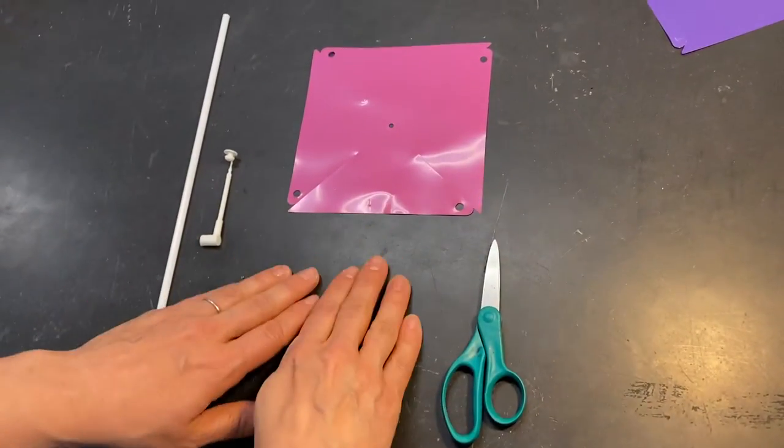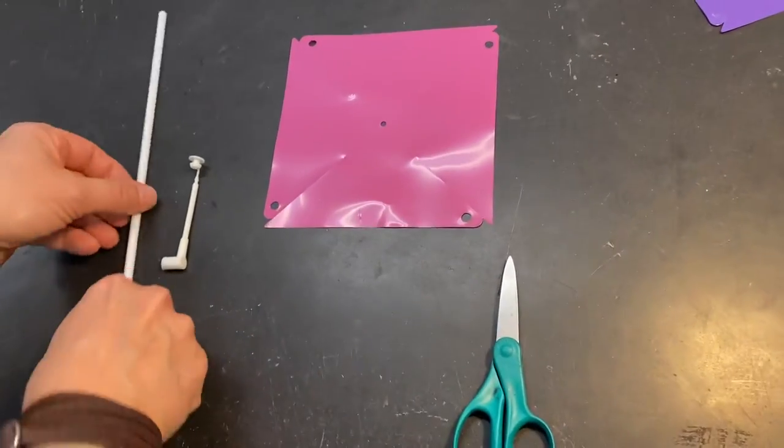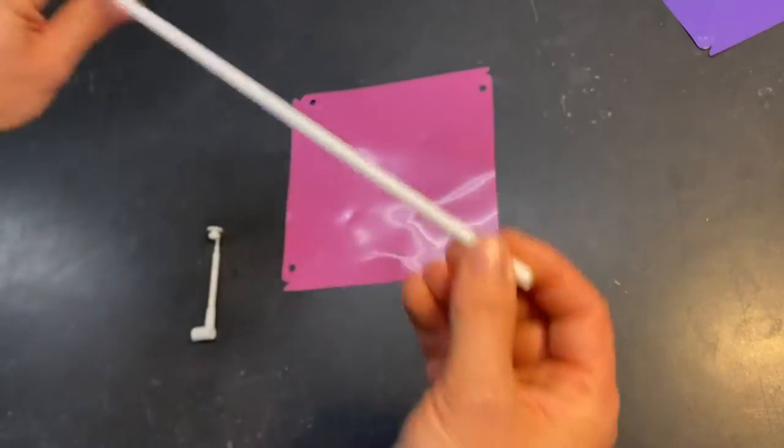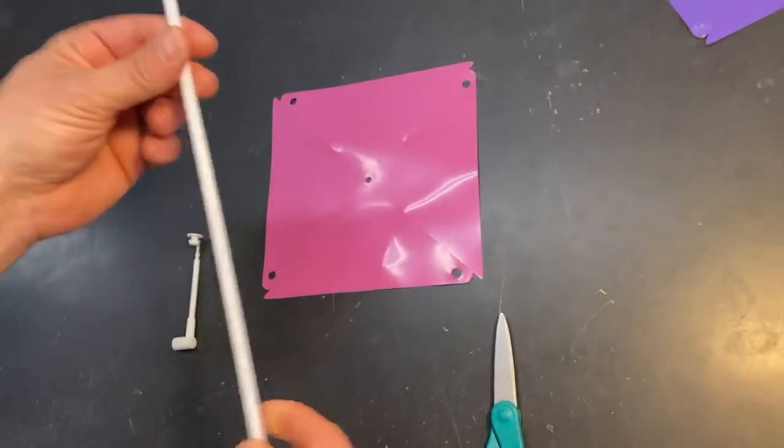All right. So here's the supplies we need to make the pinwheel today. This is a hollow plastic tube or like a thick straw that you have in your bag.